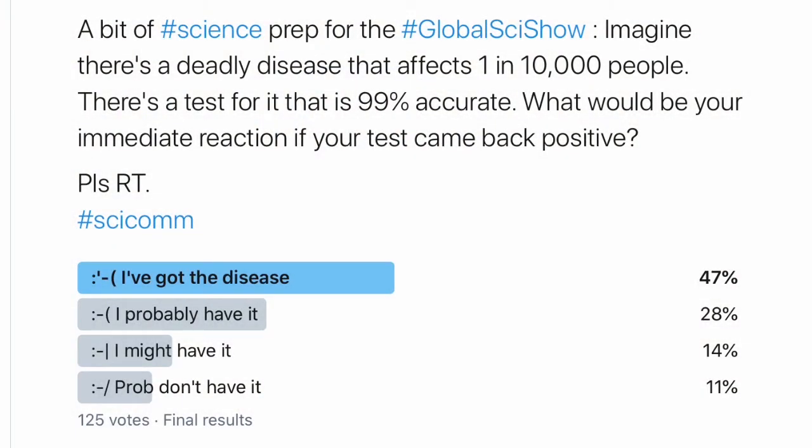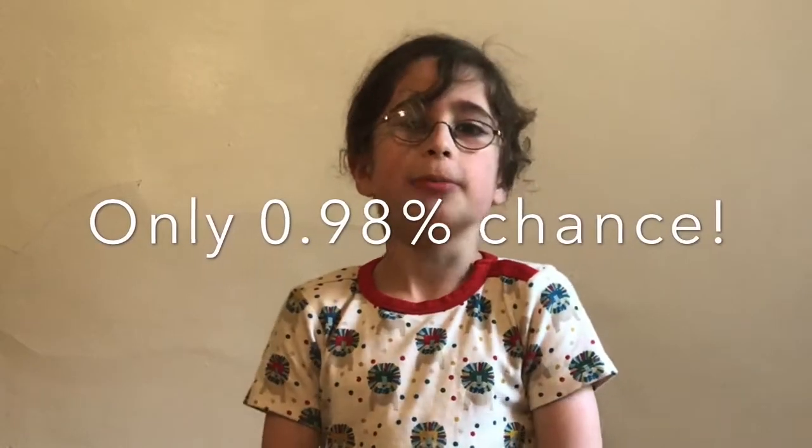So you've come up with a number now. My mum put a poll on Twitter and 75% of you thought that you probably have the disease or you definitely do. But did you know the chances of you actually having it are less than one percent? If you want to be precise, which I do, it's 0.98%.